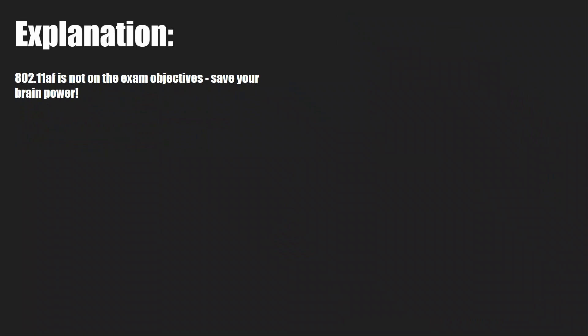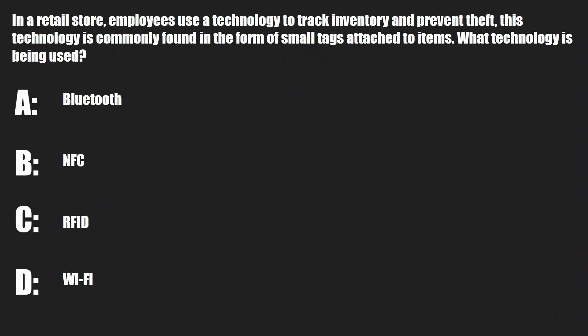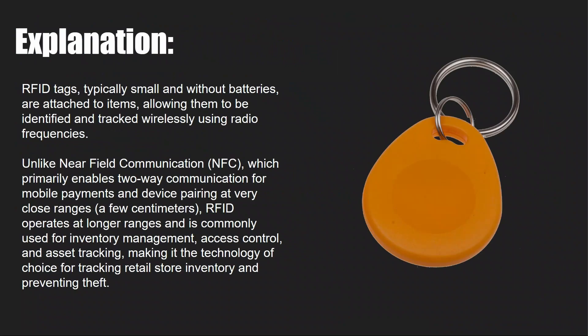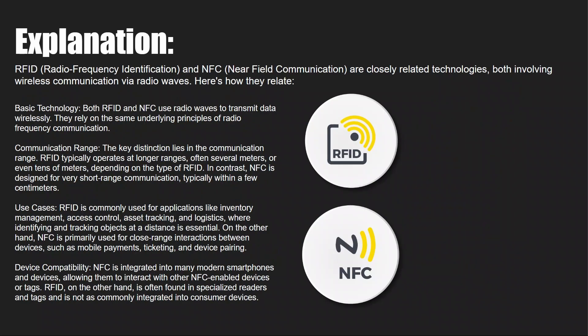In a retail store, employees use a technology to track inventory and prevent theft. This technology is commonly found in the form of small tags attached to items. What technology is being used? A, Bluetooth. B, NFC. C, RFID. Or D, Wi-Fi. The answer is C, RFID. NFC and RFID are similar, but keep in consideration the reasons they're used and also the range — that might help you in those tricky questions. There's additional explanation here on RFID and NFC. The range and the reason it's used are the main things you need to know to master questions relating to these two technologies.